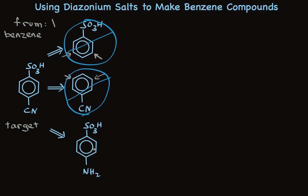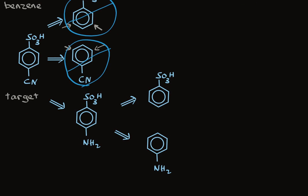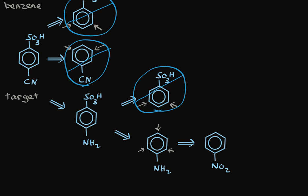Now we need to figure out what precursors could be used to make the amino-bearing intermediate. The benzene sulfonic acid group is a meta-director, so we have to rule out using that compound to make the para-aminobenzene sulfonic acid. But the NH2 group is an ortho-para director — that's what we need. We'll have to purify the para-product to remove any ortho that forms. We can use aniline as a precursor, and we know we can make aniline from nitrobenzene, and nitrobenzene from benzene. So this is a good synthetic route.